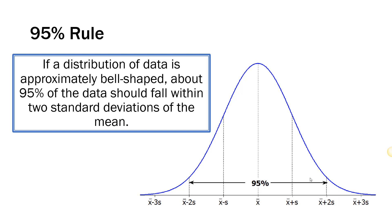When I say within two standard deviations, what I mean is that if we take the mean and add the value of two standard deviations, or take the mean and subtract the value of two standard deviations, then between those two numbers we expect 95% of the observations to be.